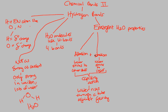Another thing about cohesion is that it also creates surface tension. Water sticking to itself creates surface tension, which is what allows something like a fly or a mosquito to land on water, because the water is cohesive — connected to each other — creating that surface tension that the insect can land on.